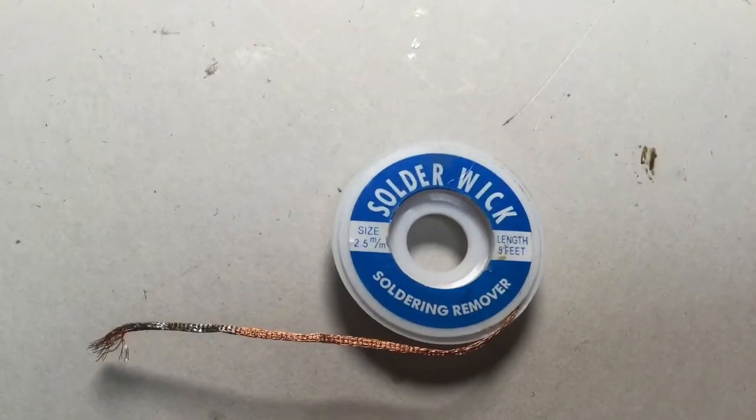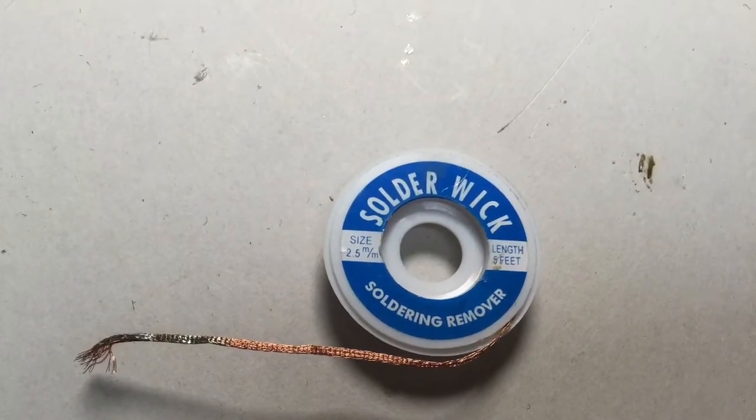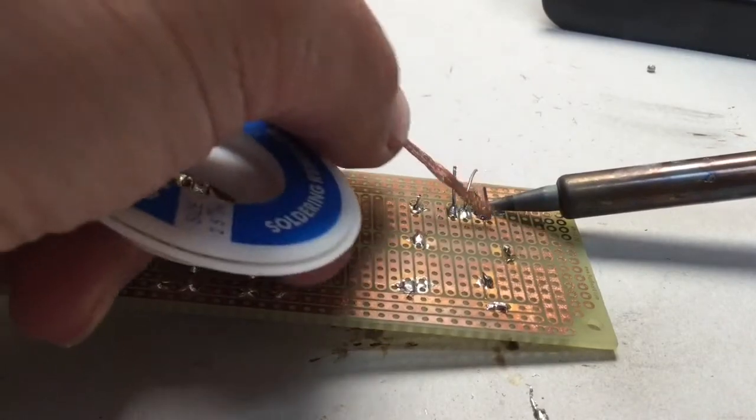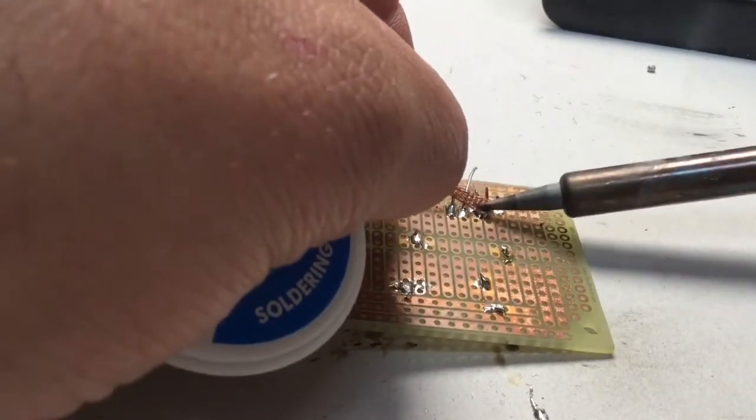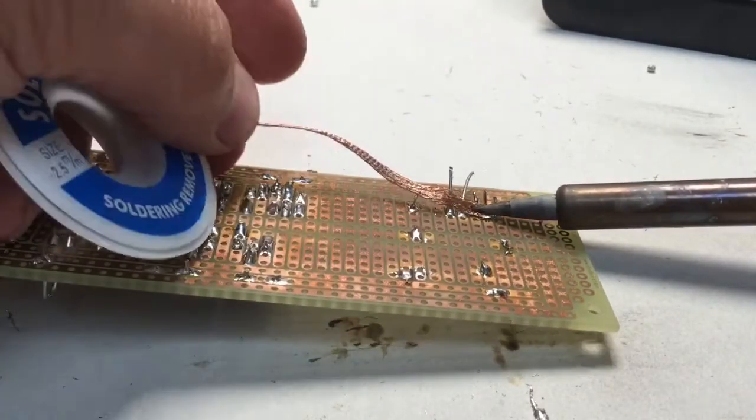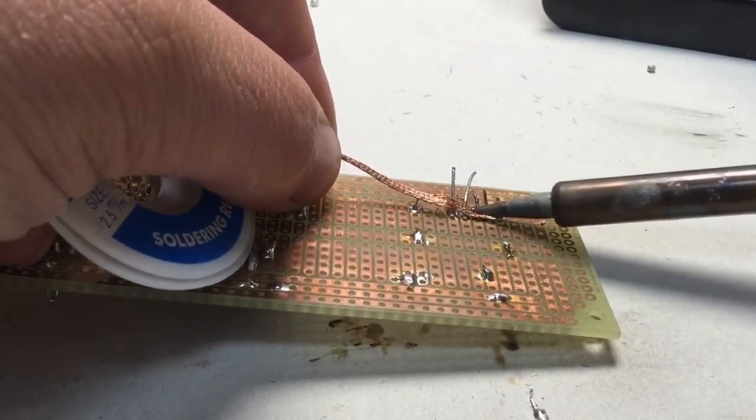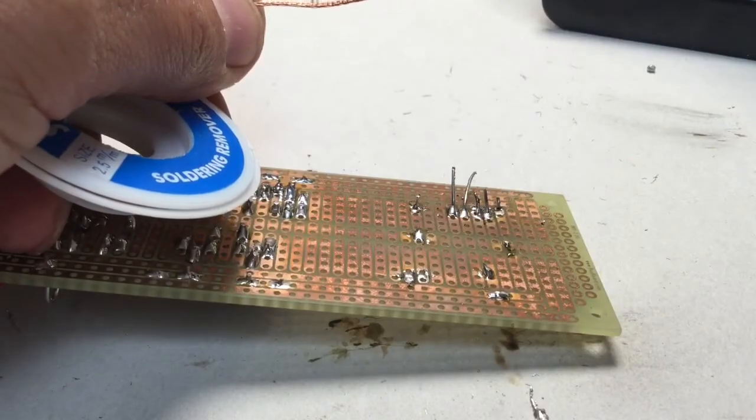Another tool that is used when removing excess solder on our circuit board is known as solder wick. We simply have to reheat the solder, and the braided copper wire will actually absorb the excess solder, pulling it away very cleanly off the board.